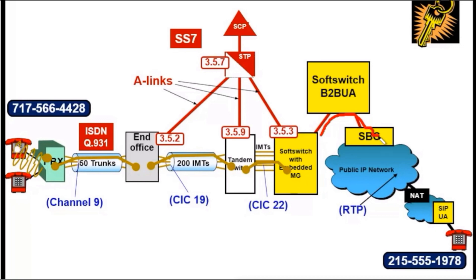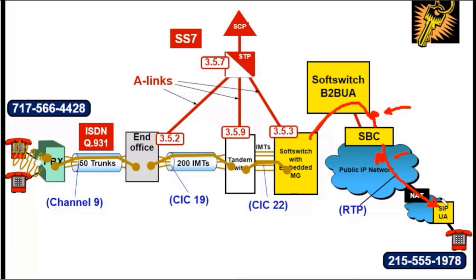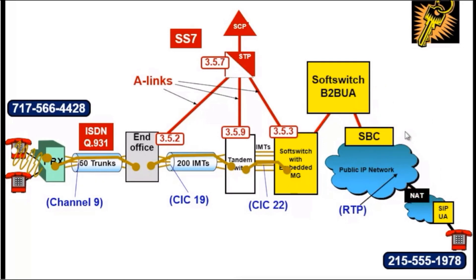Now a session border controller is going to make modifications to the invite, making it appear as though the invite originated from the outside of the session border controller. A session border controller has two interfaces: one facing in, which usually has a private address, and one facing out, which has a public address. So when the invite arrives at the session border controller, it completely rewrites the invite, making it appear brand new, popping out the outside interface, effectively deceiving the called party into thinking the call originated from the session border controller. This allows the session border controller to hide the rest of the network, giving us an untrusted and a trusted side.